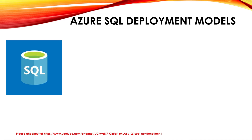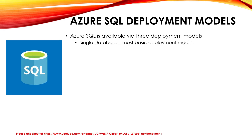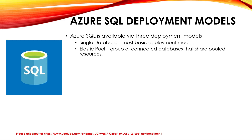Now let's look at the Azure SQL deployment models. Azure SQL Database is available in three deployment models: first, single database — the most basic model, deployed to an Azure VM and managed with a SQL Database server; second, elastic pool — a group of connected databases that share pooled resources; and third, managed instance — a fully managed database instance designed to enable easy migration of on-premises SQL databases.